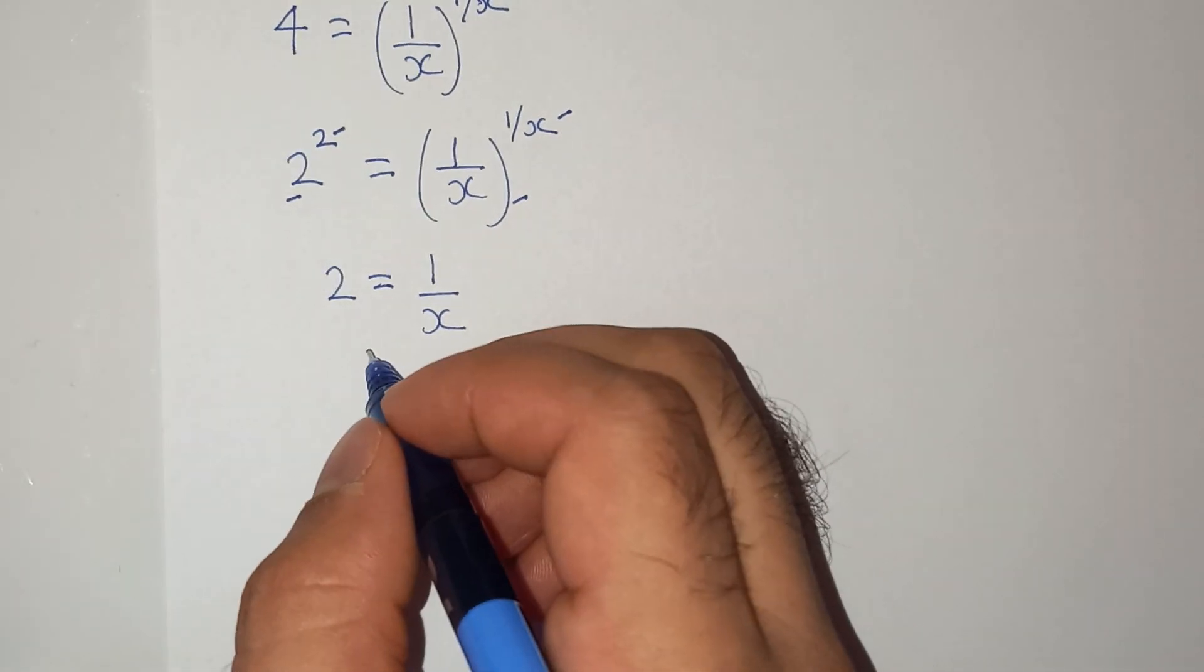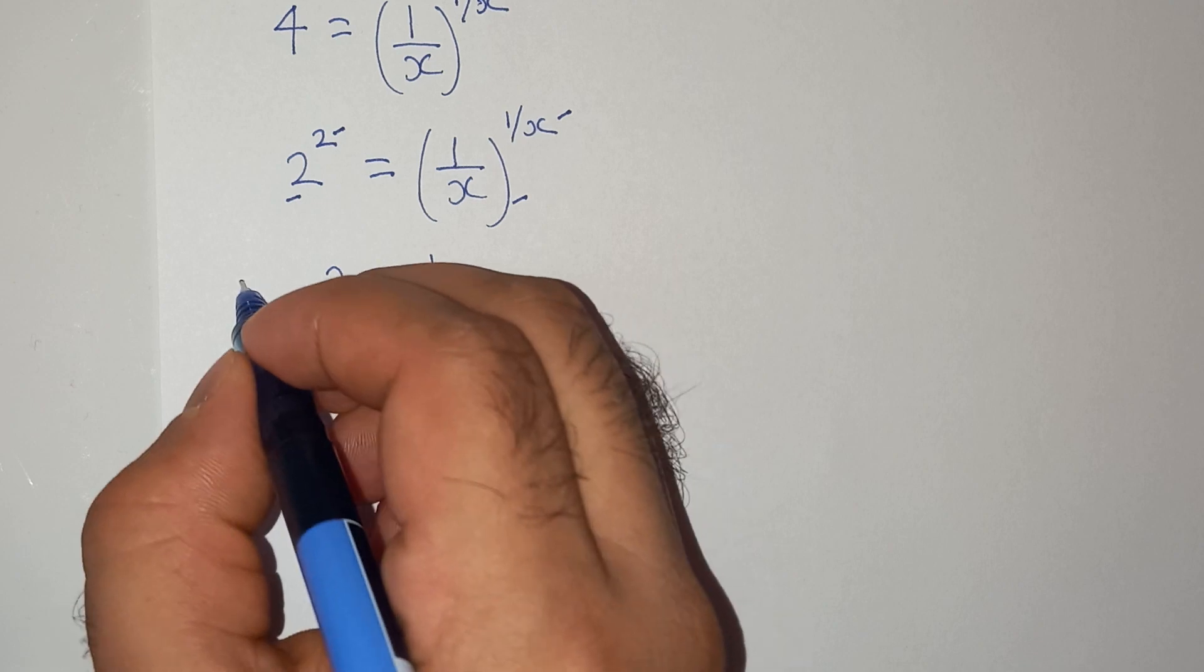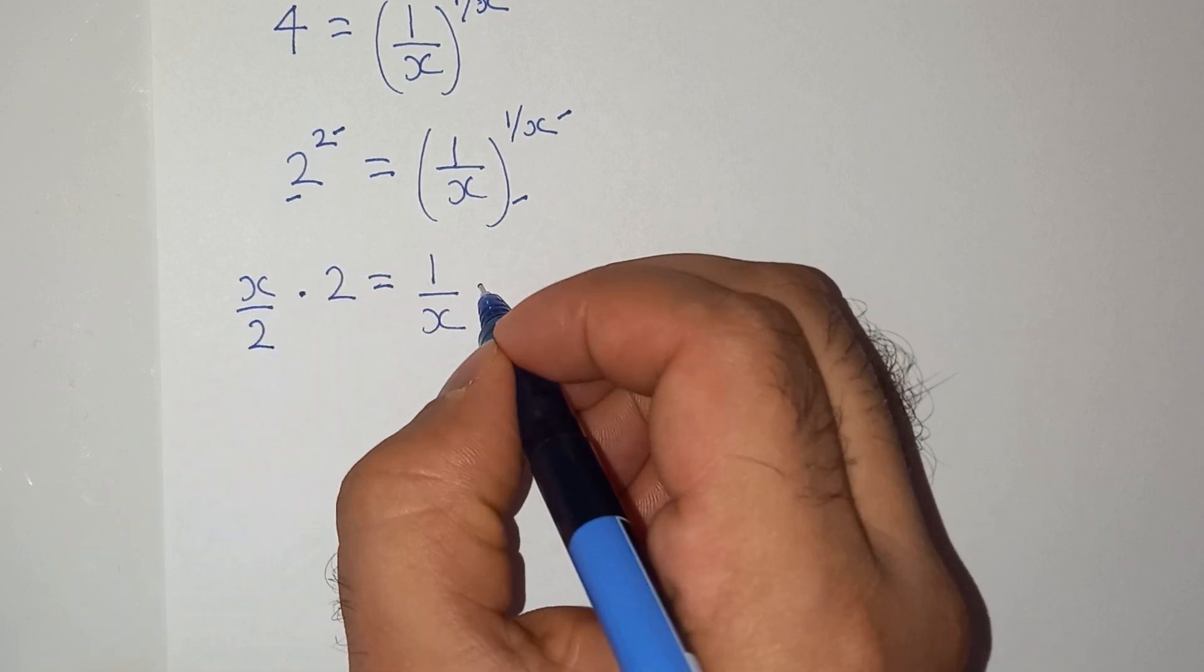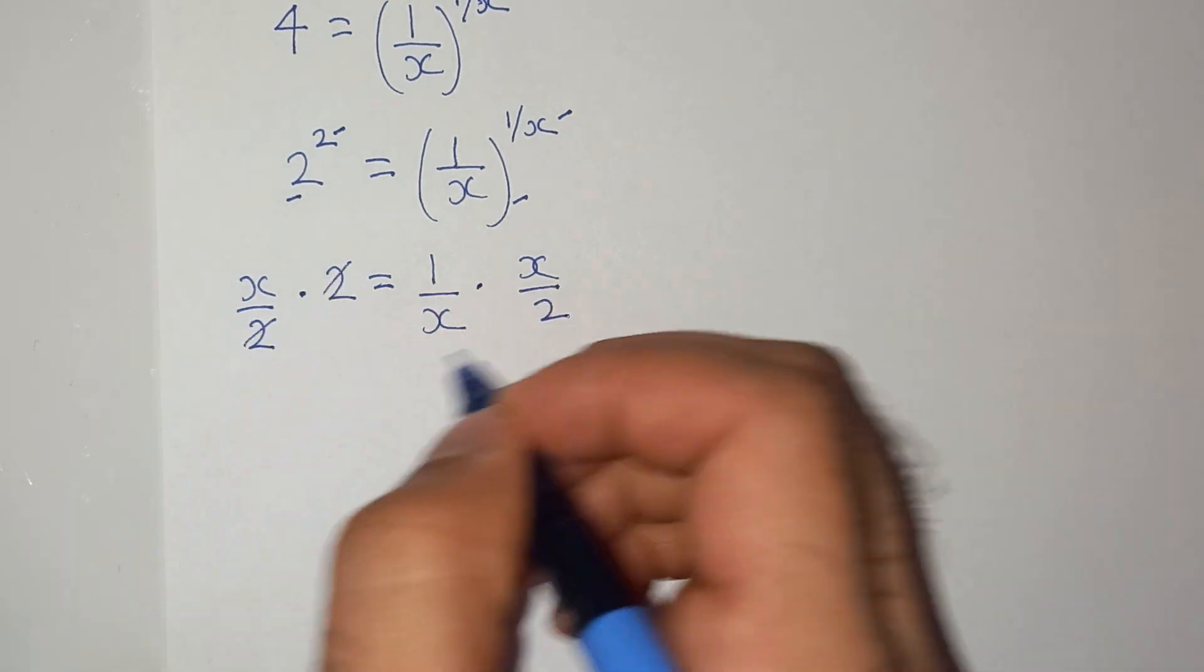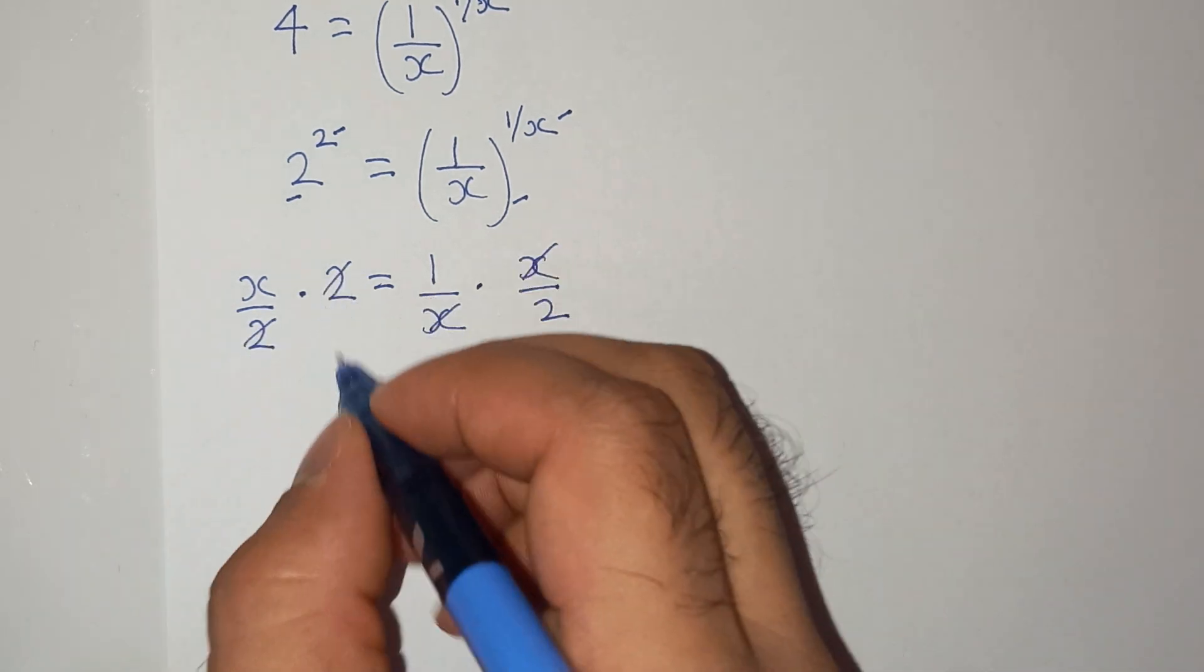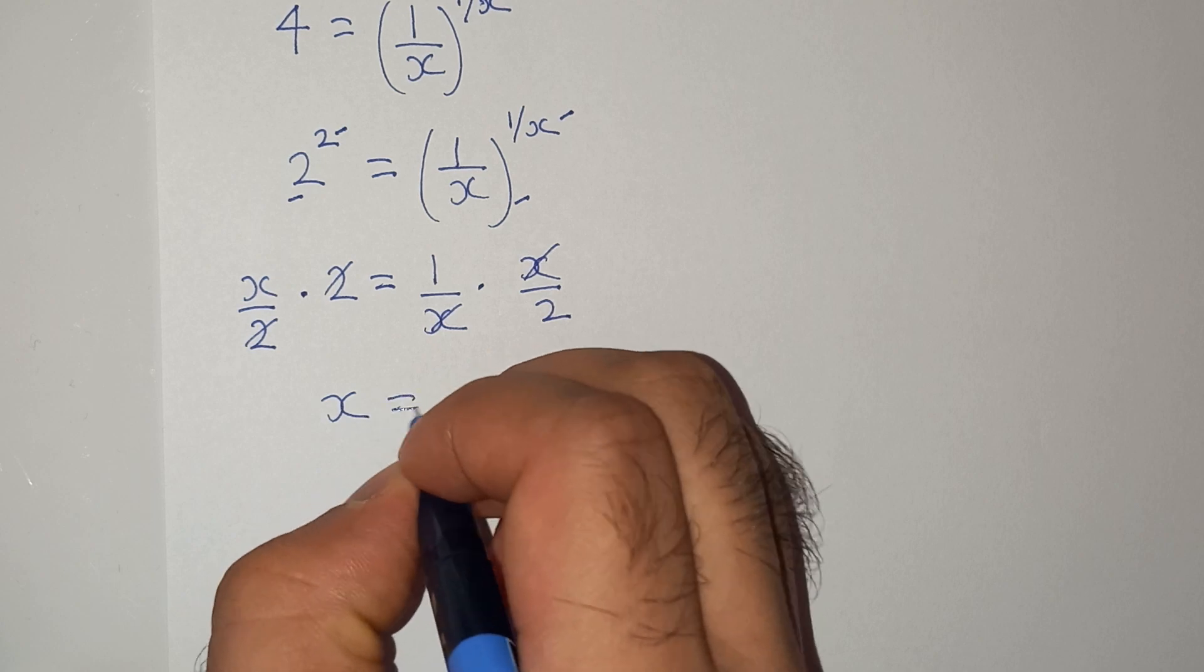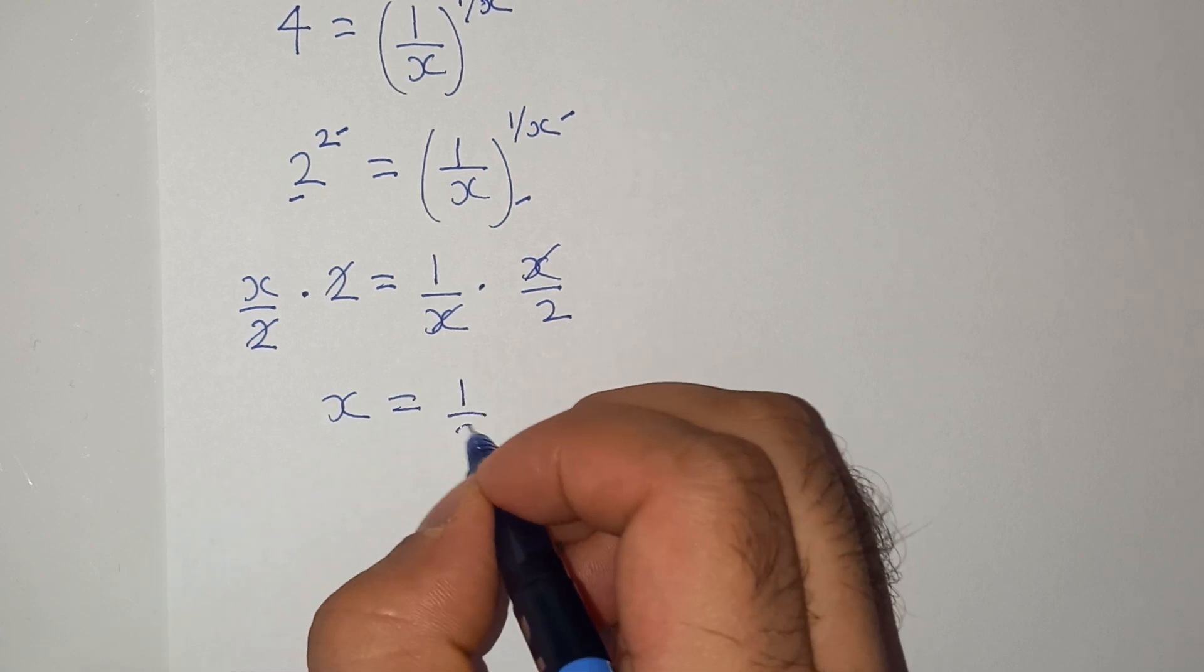Now let's multiply x/2 on both sides. So this 2 and 2 will cancel, and this x and x will cancel. So we have x = 1/2.